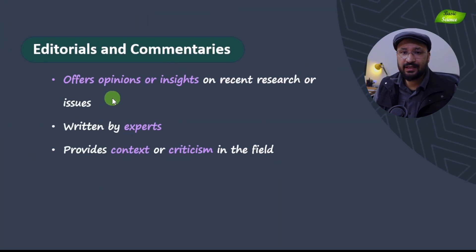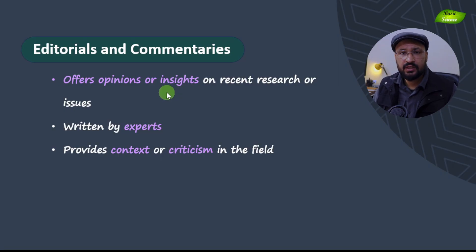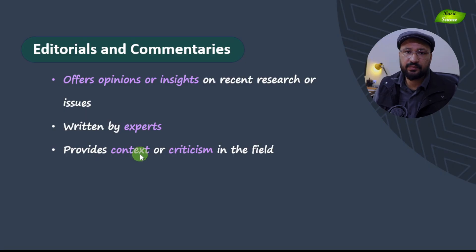After that, you have editorials and commentaries. If you are an expert in a particular area, a journal can ask you to provide your commentaries on specific research or a specific research domain. You can offer opinions and context, or criticism and updates on that research. This type of publishing is usually written by experts, so young researchers may not have this opportunity initially, but can pursue it as they develop expertise.